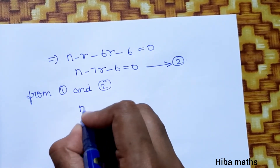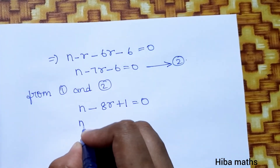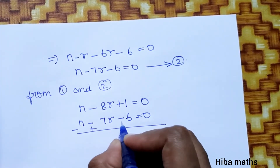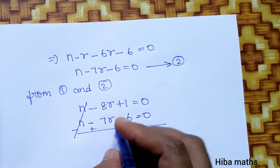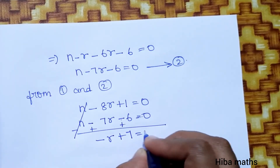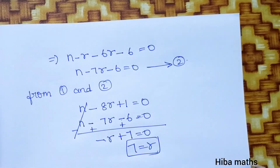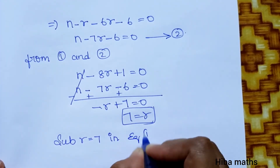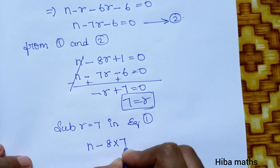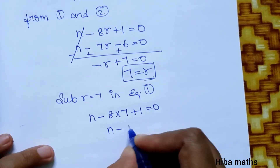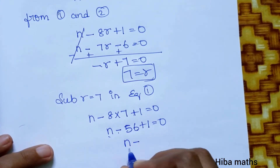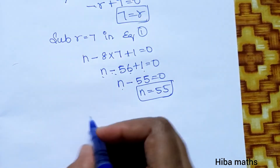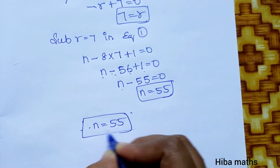Using the elimination method on the two equations — equation 1: n - 8r + 1 = 0 and equation 2: n - 7r - 6 = 0 — subtracting gives -r + 7 = 0, so r = 7. Substituting r = 7 into equation 1: n - 56 + 1 = 0, therefore n = 55.